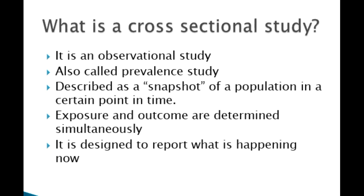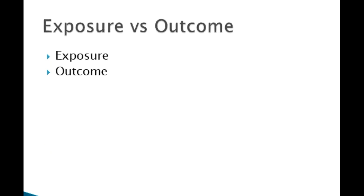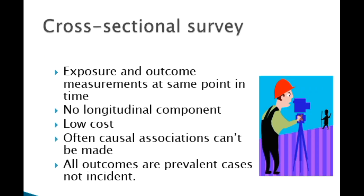It is worth noting that an exposure is a characteristic being investigated, and you may find that it has been given other names like independent factor, predictor, or risk factor. An outcome is the expected results and has been given various names like the dependent factor. In cross-sectional studies, the exposure and outcome are measured at the same time.